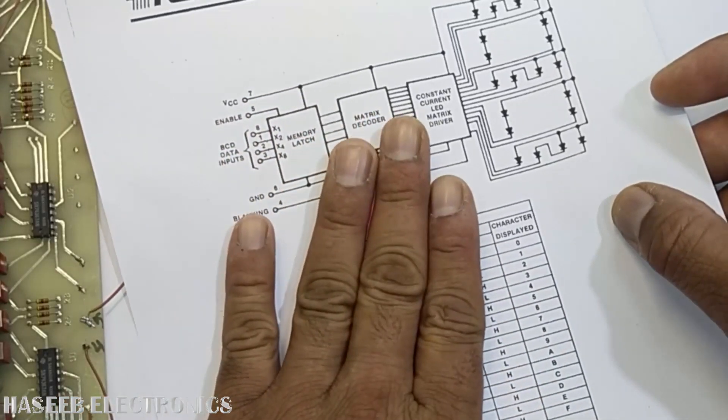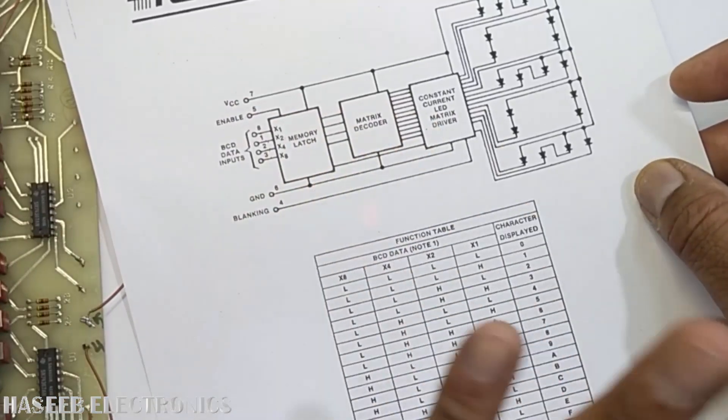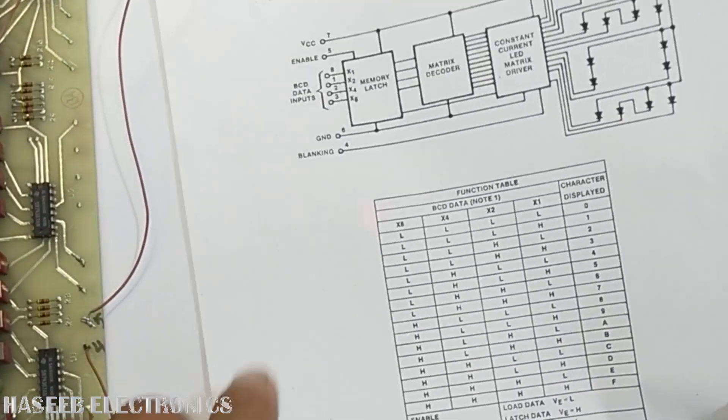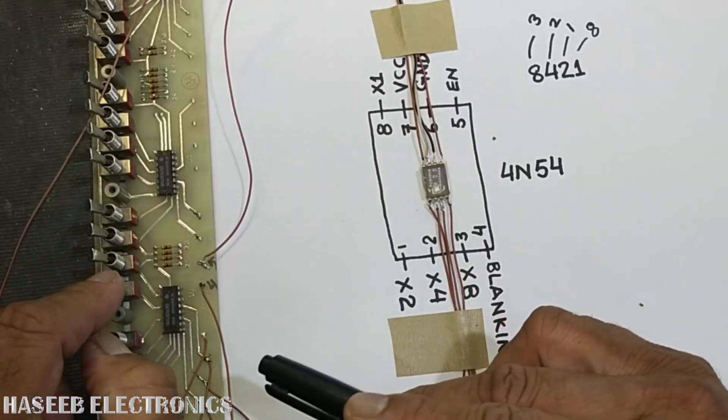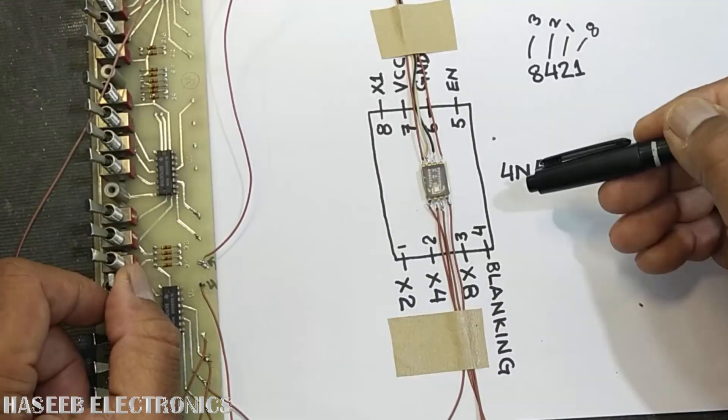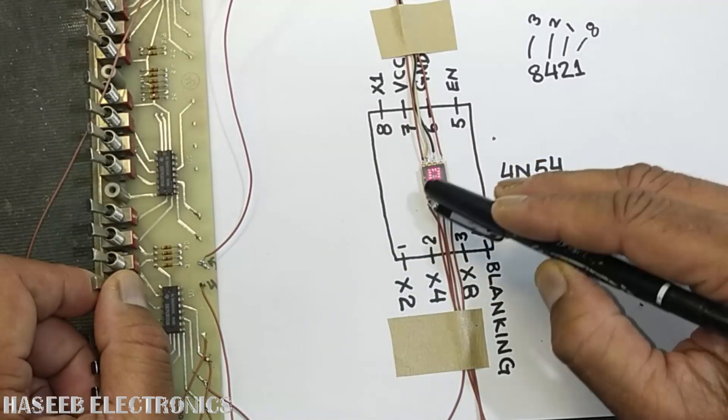Then it has a blanking pin. When this pin is high, logic level high, it will turn off the display.